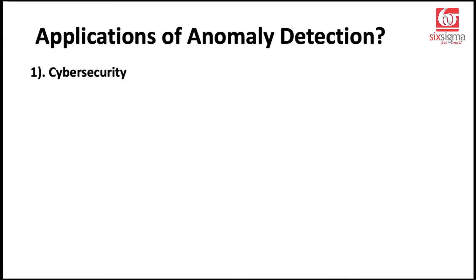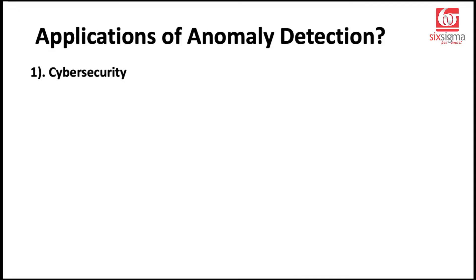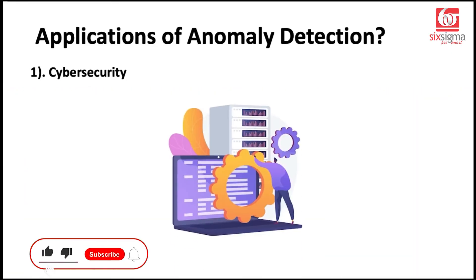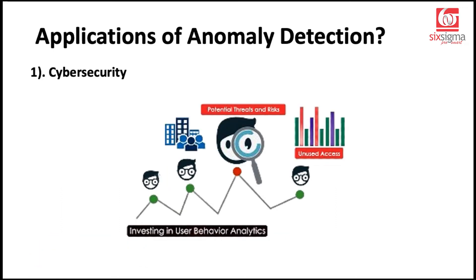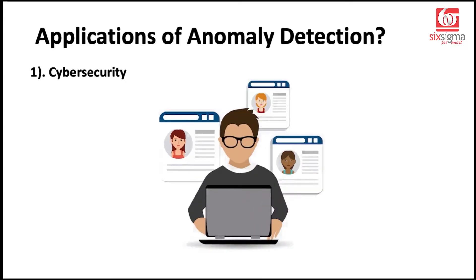First application could be in cybersecurity. When it comes to cybersecurity, we have intrusion detection systems. Anomaly detection is used to identify unusual patterns in network traffic or system logs, indicating potential security breaches or malicious activity. These could also be used for user behavior analysis, wherein detecting the anomalies in user behavior could help identify compromised accounts or insider threats by analyzing deviations from typical usage patterns.